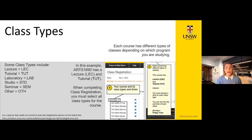There are many different class types depending on the courses you are studying. For example, science programmes may have labs, whereas design-based courses may have studios. Common class type codes are shown on the left. For example, Arts 1690 has a lecture and a tutorial. When completing class registration, you must select all class types required for the course, and the system won't let you complete the registration process without doing this.